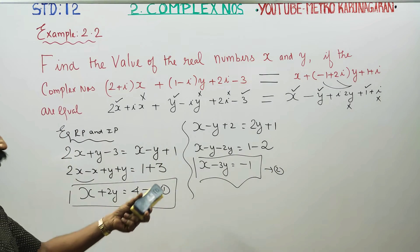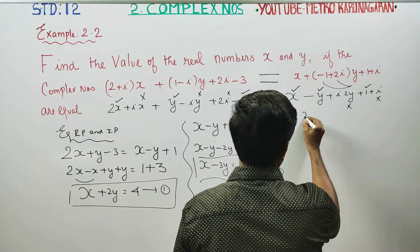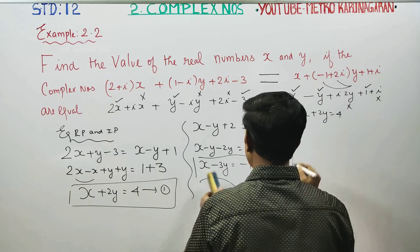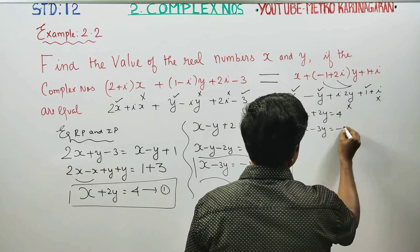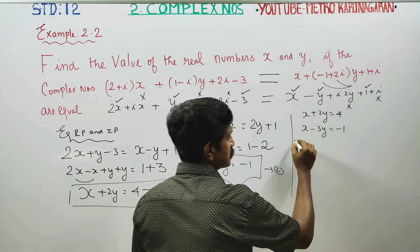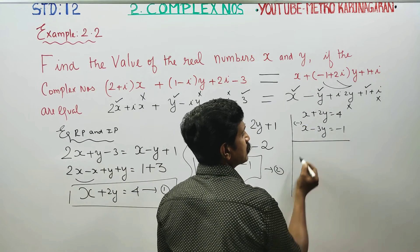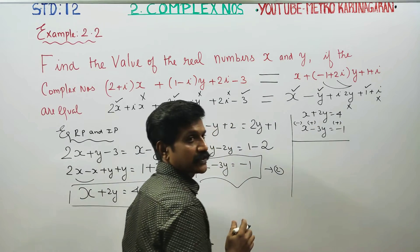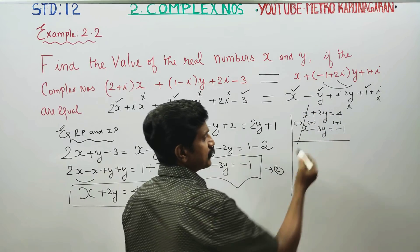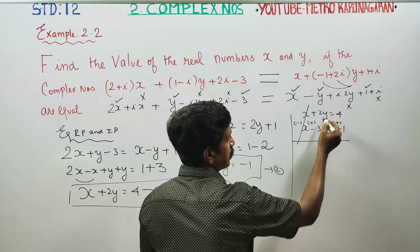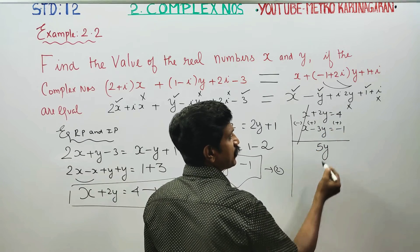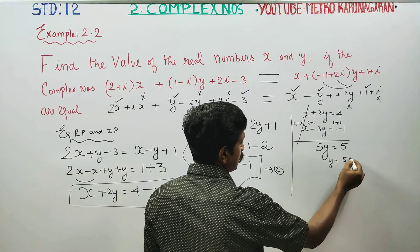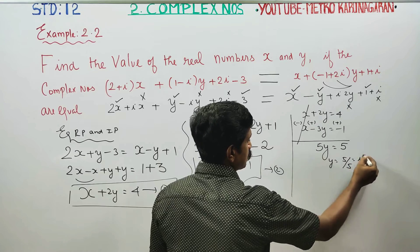Now Equation 1 and Equation 2 are solved. Equation 1 is x plus 2y equals 4, and Equation 2 is x minus 3y equals minus 1. Subtracting Equation 2 from Equation 1: x minus x cancels, 2y plus 3y equals 5y, and 4 plus 1 equals 5. So 5y equals 5, divide by 5, y equals 1.